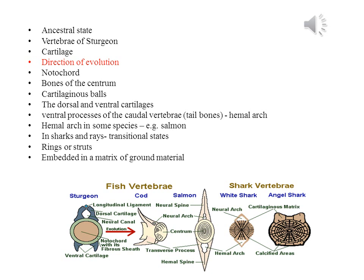As in the salmon, in sharks and rays you can see transitional states whereby only part of each vertebra is calcified. These hardened or bony parts, which are normally in the form of rings, are embedded in a matrix of ground material that is still cartilage.